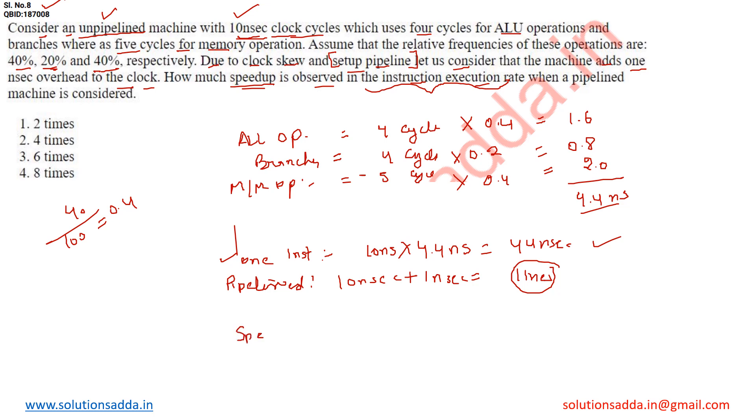How can we calculate the speedup? Unpipelined time divided by pipeline time: 44 nanoseconds divided by 11 nanoseconds equals 4. That means four times speedup compared to unpipelined. So the correct option for this question is option number two: four times.